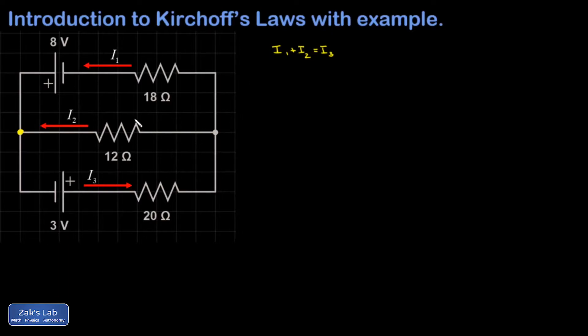Then I start thinking about voltage loops, and I like to index these. So I'm going to do this little loop, and I'll call that number one. And I'm going to start right here from this bottom left corner. So the first thing I run into is an increase of three volts. The next thing I run into is a resistor with resistance 20 ohms and a current I3, and I'm going the same direction of the current. So this is going to be a voltage drop of 20 ohms times I3.